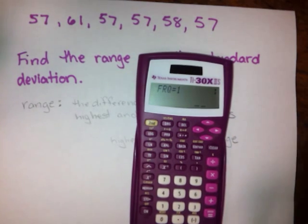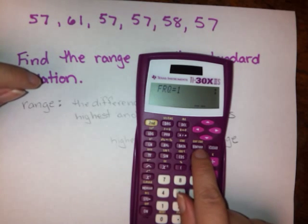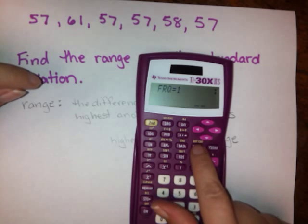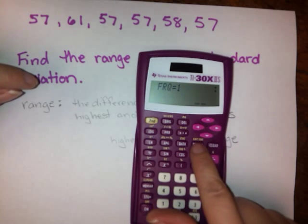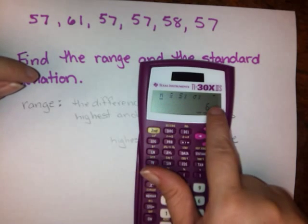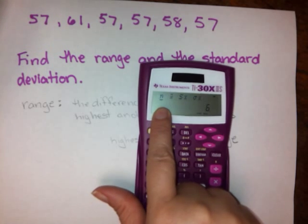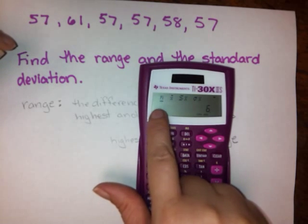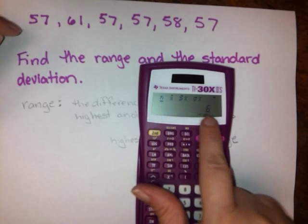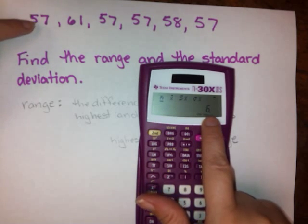Now what we need to do to get our standard deviation at this point is hit stat there. That's right next to the data button, kind of underneath the arrow buttons here. If we hit that, it's going to give us this menu here. This first thing, N, tells us how many items were in our list. So if you want to double check to make sure you entered everything correctly, you can count and make sure that this matches up.